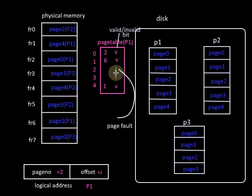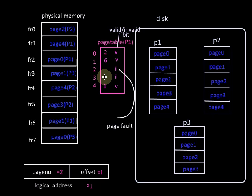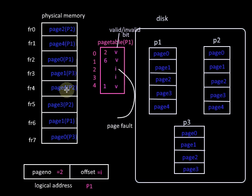If there is a page fault, it will create a trap to the operating system. The state of the process has to be saved, then we need to bring the desired page from disk to physical memory. If a free frame is available, we bring the page to that free frame and update the page table. If no free frame is available, we must choose a page for replacement using a proper replacement algorithm, then replace it with our desired page.